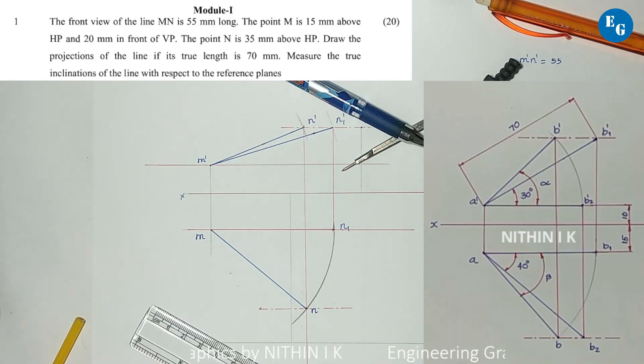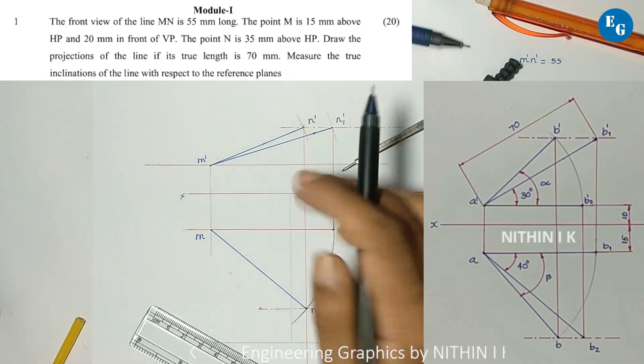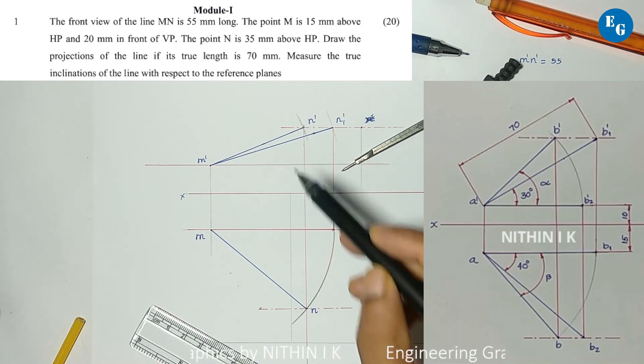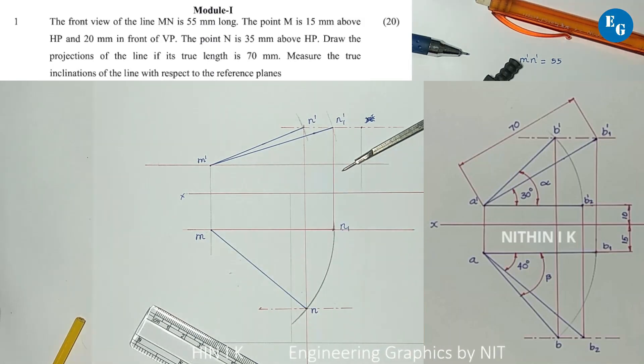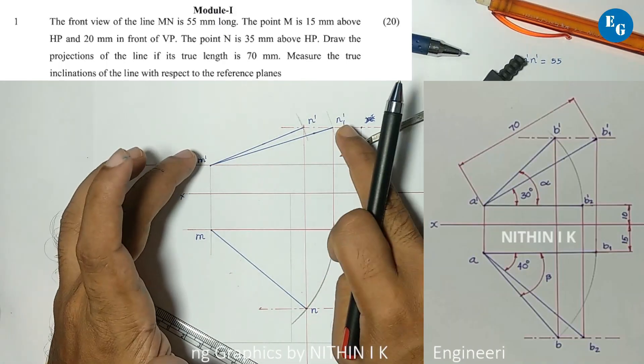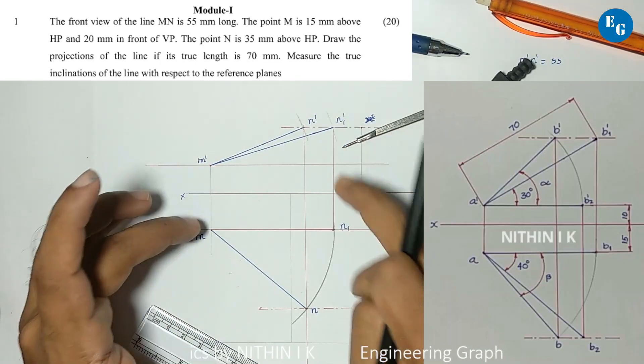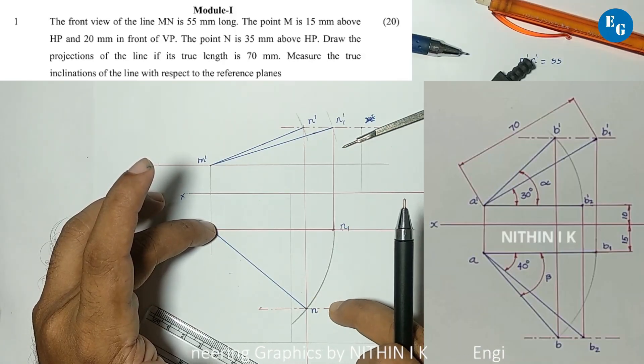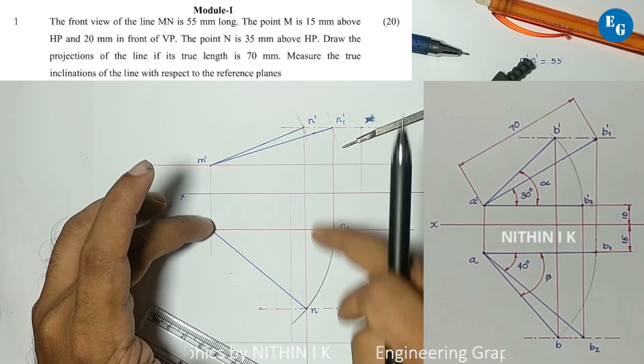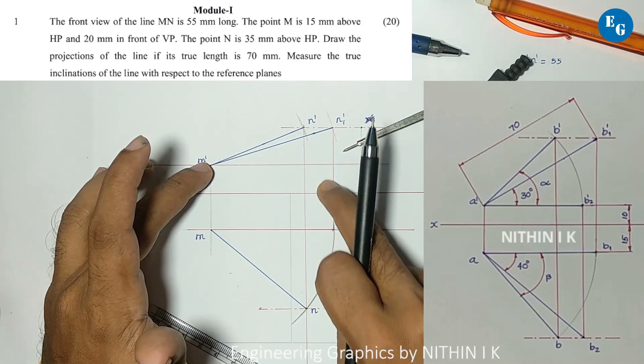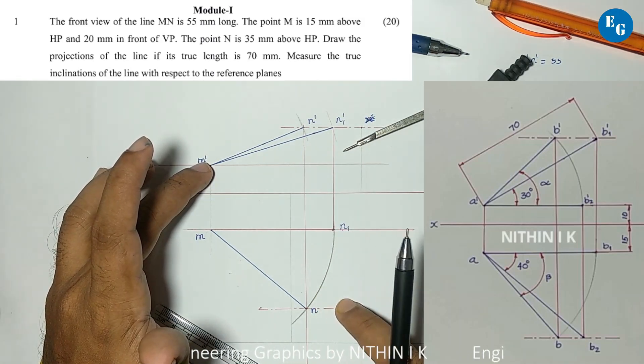Projection is complete. Now for measurements: the true inclination of the line with respect to reference planes. The inclination with HP is the angle in m dash n1 dash. The inclination with VP requires finding MN2. MN2 equals the true length 70mm with m fixed, and n2 is located randomly on the same locus.